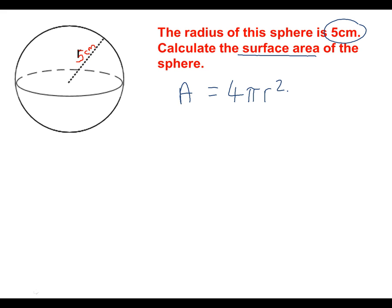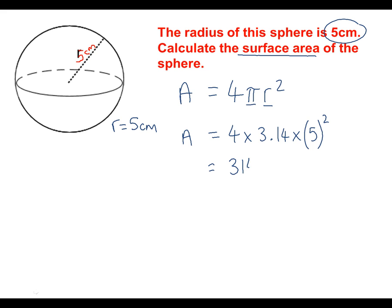We don't need to remember this — we can just look it up. Looking at this formula, we need pi, which is 3.14, and we need the radius, which is 5 centimetres. So just put these numbers into our formula: area = 4 × 3.14 × 5 squared. Type this into a calculator and we get 314.2 centimetres squared, because area is measured in centimetres squared.